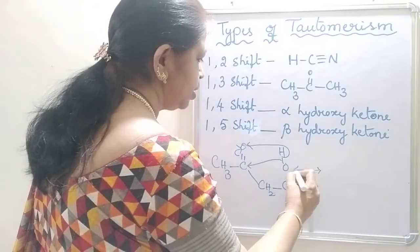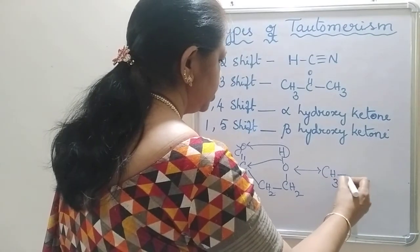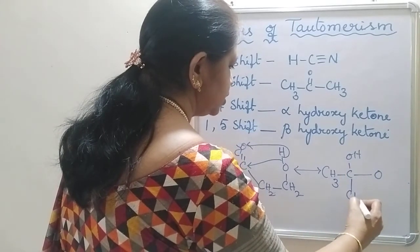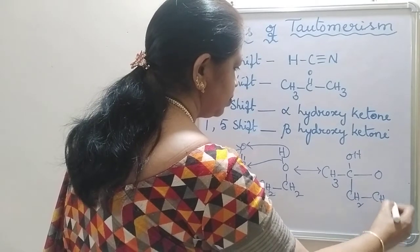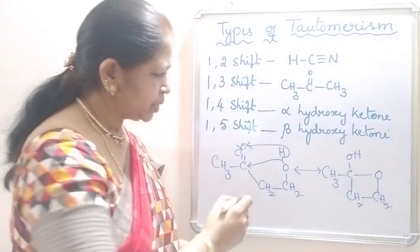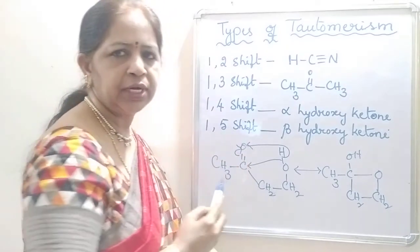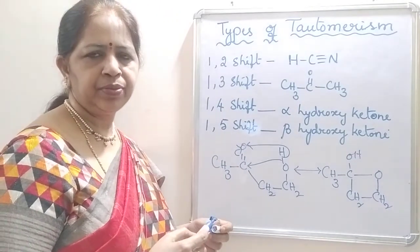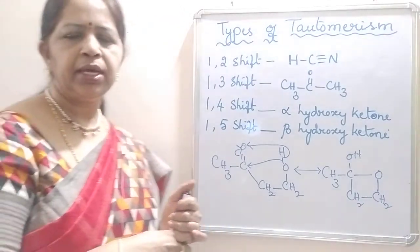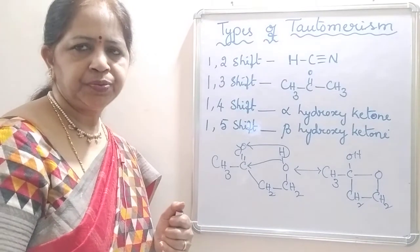Resulting in the formation of a cyclic ether, CH3-C-OH-O-CH2-CH2. So what is the distance between the hydrogen and oxygen here? 1-2-3-4-5. That is why it is called 1-5 shift. These are the different types of tautomerisms involving a keto group and a proton.